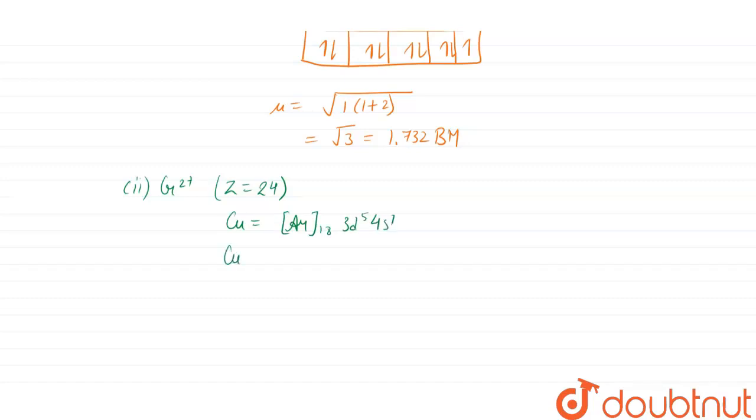For Cr²⁺, we have [Ar]₁₈ and 2 electrons have been removed, 1 from S and 1 from d. This comes out to be 3d⁴ 4s⁰.